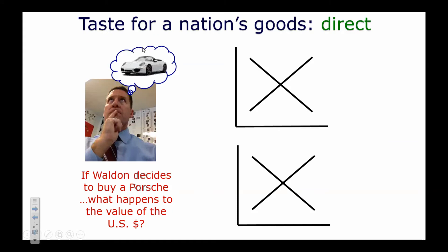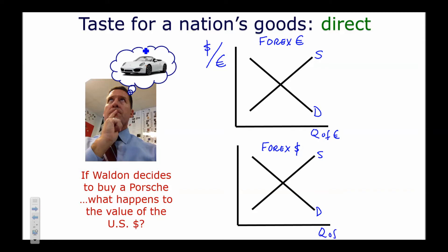Let's do some examples, and pay attention to how you draw the foreign exchange market graph. If I'm buying a Porsche — made in Germany — I need to buy euros. Label the graph 'Foreign Exchange for the Euro' with a supply curve, demand curve, quantity of euros on the x-axis, and price as dollars per euro on the y-axis. We'll also draw the US dollar graph below.